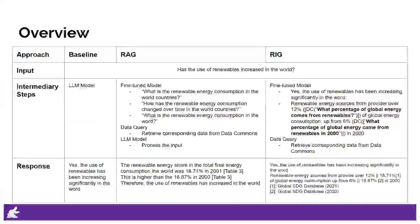The comparison between baseline, retrieval interleaved generation, and retrieval augmented generation approaches highlights significant differences in how they generate responses containing statistical data. The baseline approach simply presents statistics without providing supporting evidence, lacking transparency and reliability. In contrast, RIG and RAG utilize data commons to source authoritative data, enhancing the credibility of the responses. The intermediary steps involved in these approaches are represented by dotted boxes in diagrams. Specifically, RIG incorporates a strategy where it intersperses statistic tokens with natural language questions that are well-suited for retrieval from data commons.